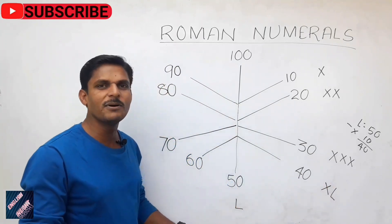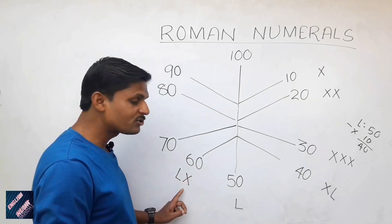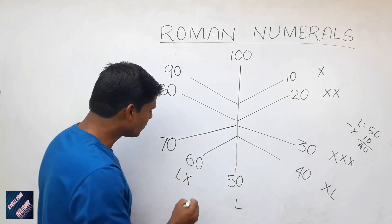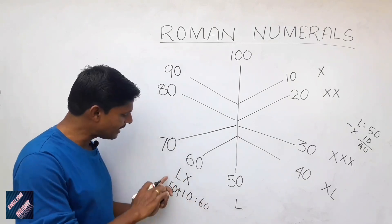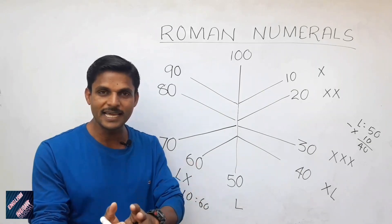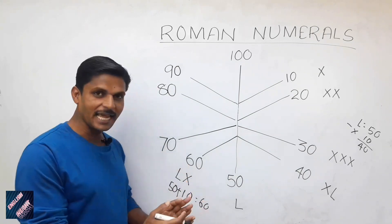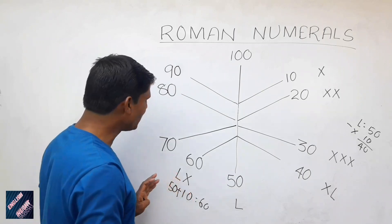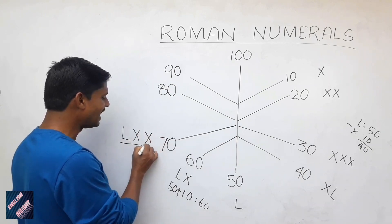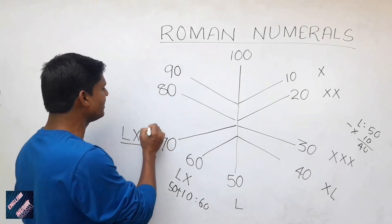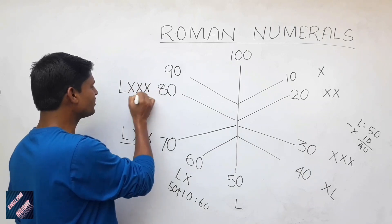What about 60? 60 is LX. L is 50 and X is 10, used after L — so 50 plus 10 equals 60. 70 is LXX — LX is 60, and another X adds 10 to make 70. 80 is LXXX.